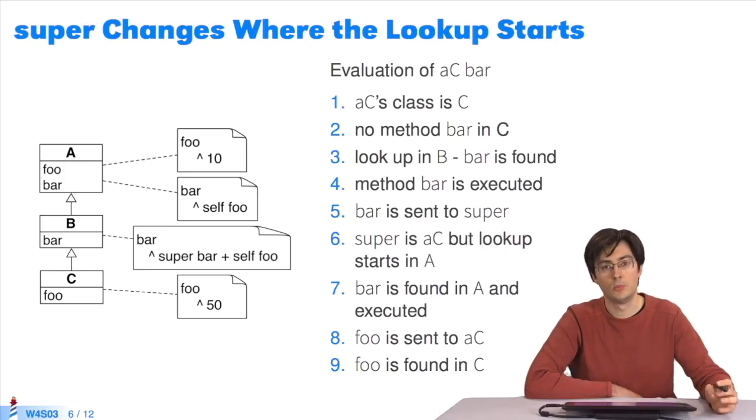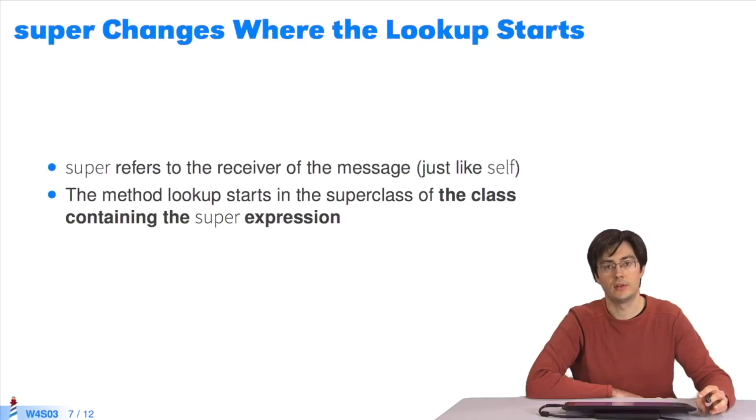The next slide reviews the details of the lookup algorithm process for further study. Super always refers to the receiver. It's exactly like self, or this in Java. Likewise, super in Java is like this and always refers to the receiver. However, when a message is sent to super, the lookup algorithm changes and begins searching for a method in the super class of the class containing the method being executed.